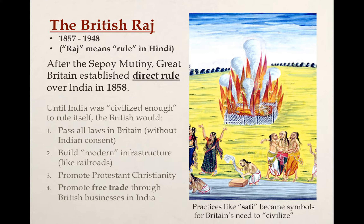As part of this direct rule, the British believed that India could rule itself, but only when it was civilized enough. So until then, the British government passed all laws in Britain. They built modern infrastructure in India, which included railroads, but also educational institutions and universities. The British also promoted Protestant Christianity, whether explicitly by having missionaries in India or implicitly by injecting Protestant Christian ideas into their statements. They also promoted free trade, which was really the most important part of the British Raj — British businesses and global businesses were able to participate in the Indian economy really without the say of the Indian people.